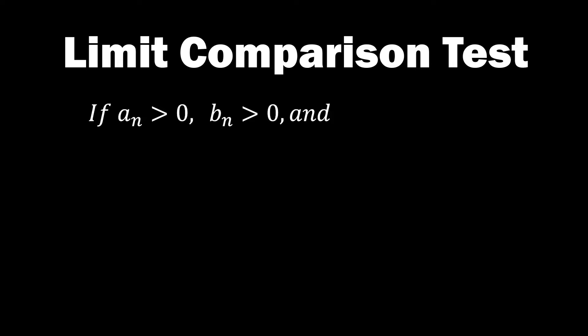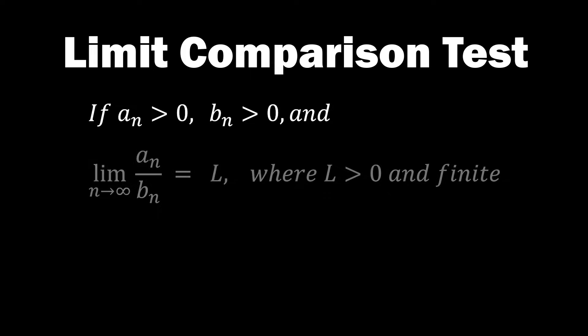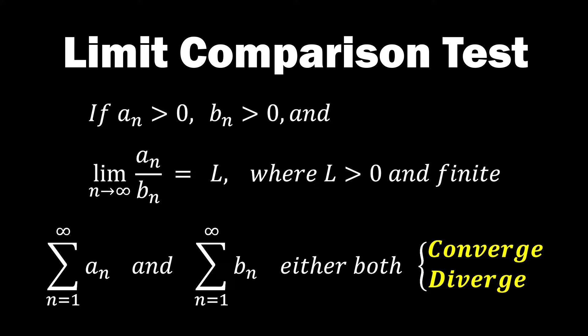If a sub n is greater than 0 and b sub n is greater than 0, and as n approaches infinity, the limit of a sub n over b sub n is positive and finite, denoted by some value L, then the infinite series of a sub n and b sub n either both converge or both diverge. This means that we can determine the convergence or divergence of a given series by comparing it with another series whose convergence or divergence we already know.